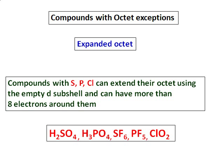They use a d-orbital and can have more than 8 electrons around it. Some examples of expanded or extended octet are sulfuric acid, phosphoric acid — we have seen those under Lewis structures previously. SF6, PF5, and ClO2 are also examples. Let's go ahead and see how their Lewis structures look.